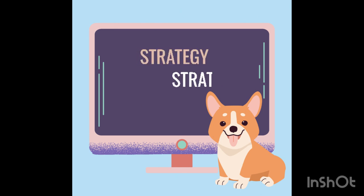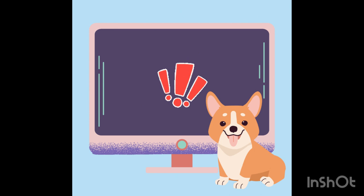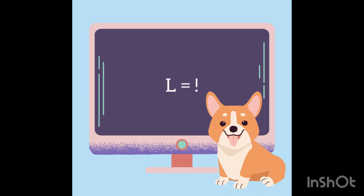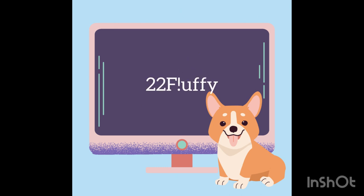Another strategy for strengthening passwords is to replace letters with similar-looking symbols. For example, you could replace the L in Fluffy with an exclamation point. Strong passwords should be at least 8 characters, so you could add in the year you adopted Fluffy to make 22FL!ffy.